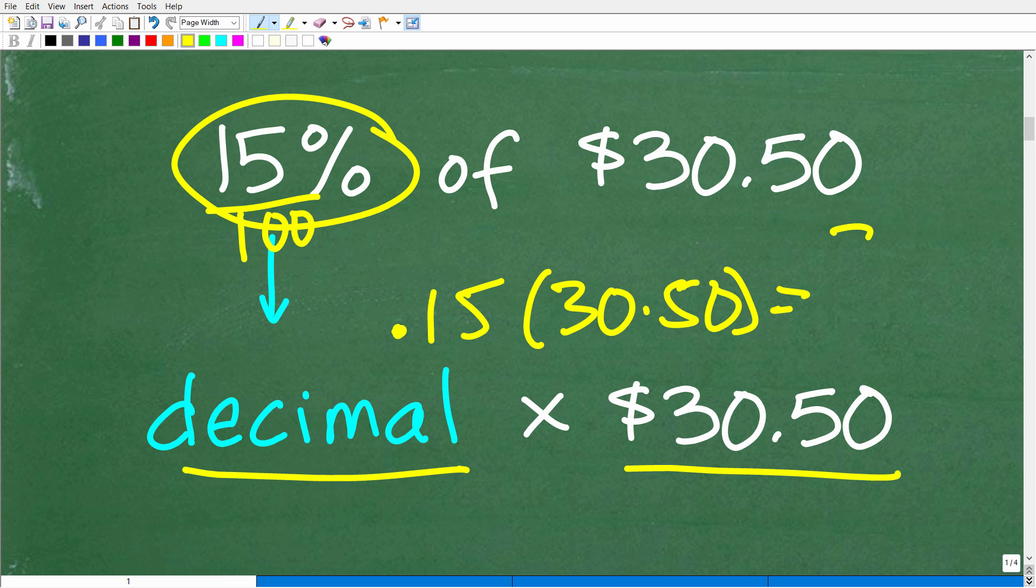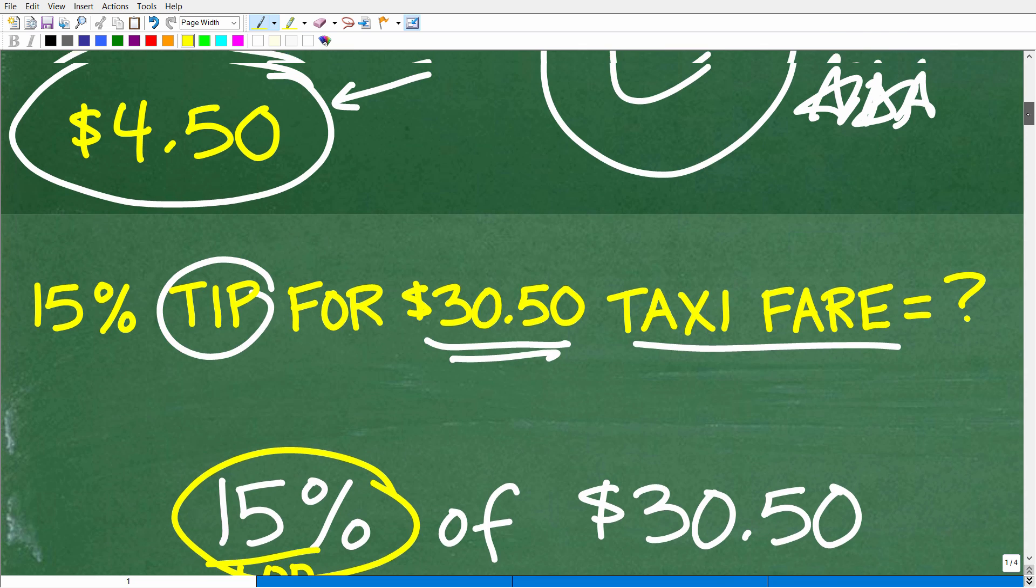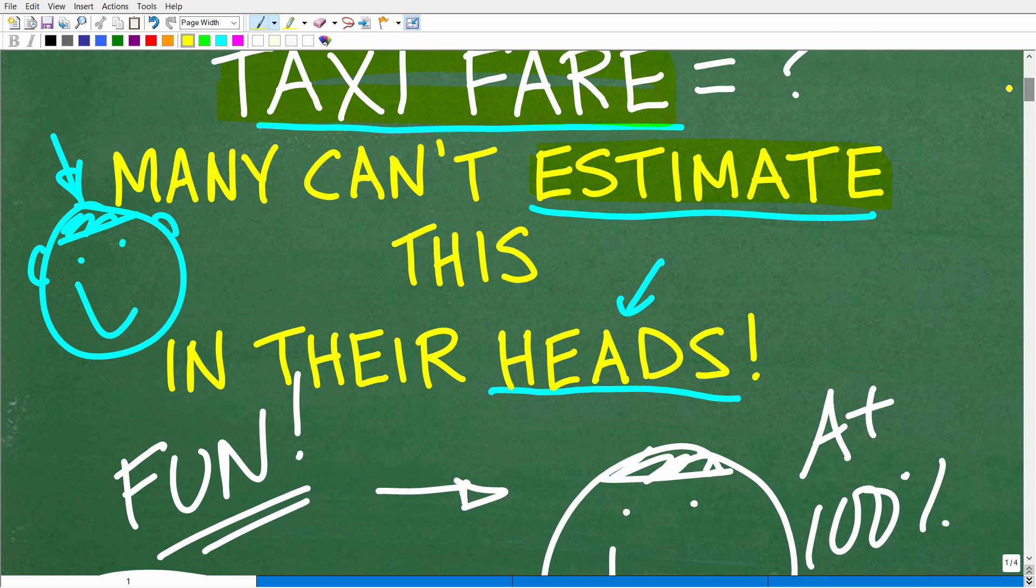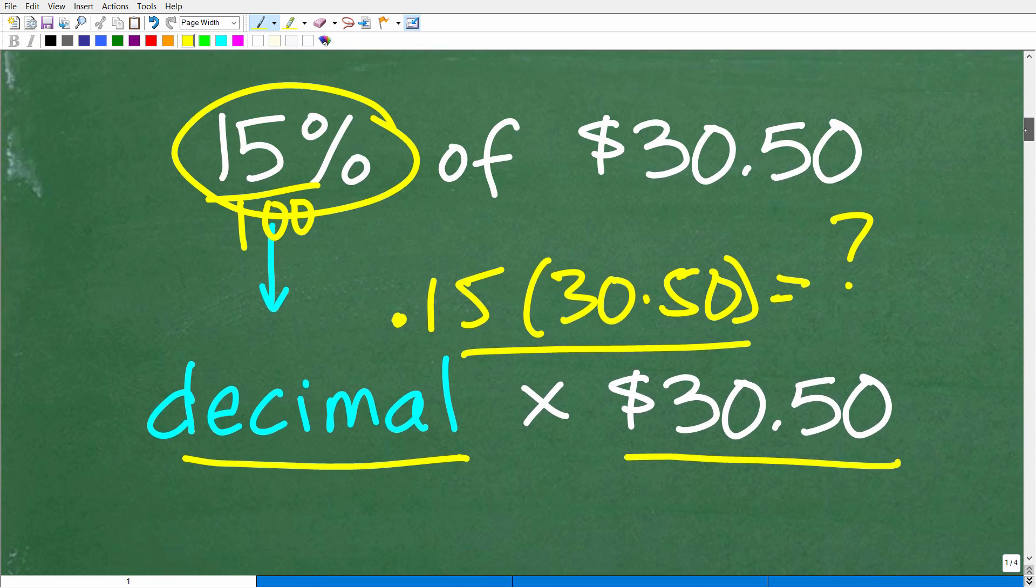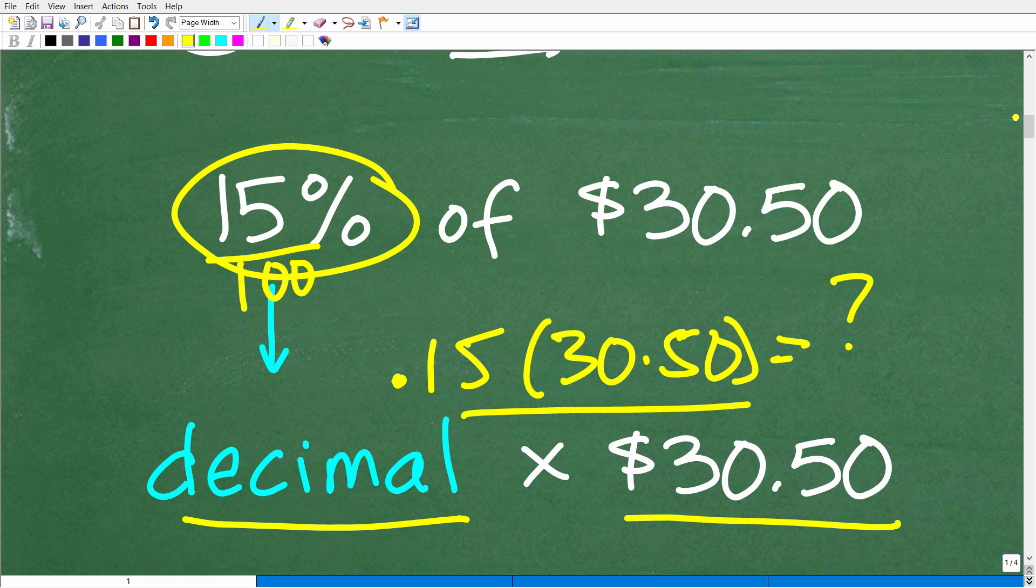Now, most of us are not going to do this math in our brain. If you actually did the problem this way, that is super impressive. But most of us are not going to do this problem this way because the problem has to deal with estimation. We're not looking for a perfect answer. We're looking for a reasonably close answer.